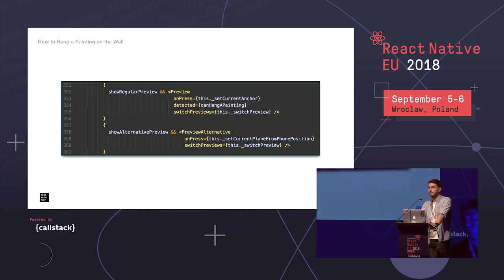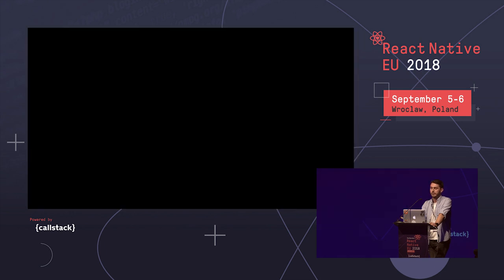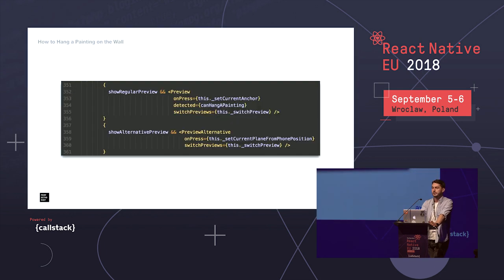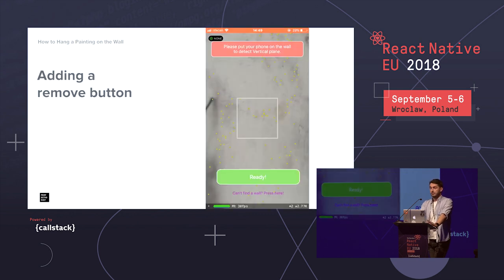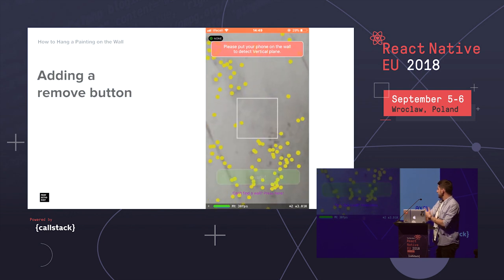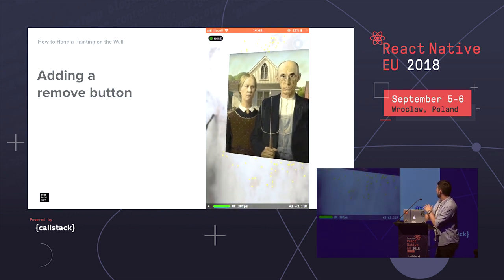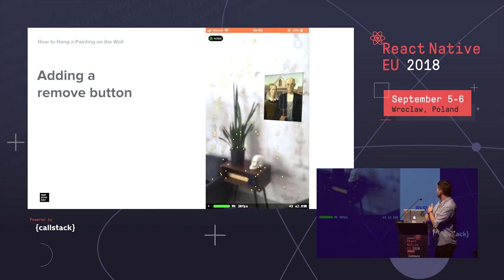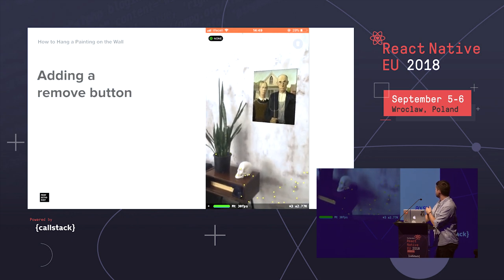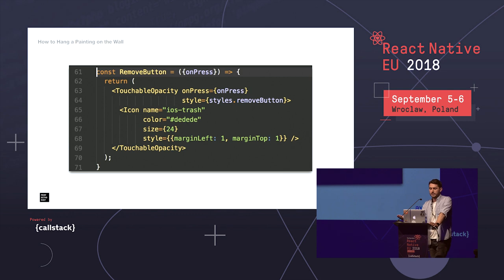For this we'll create another viewfinder and add the ability to switch between them. One downside is the camera may take a moment to refocus after we assign an object to the wall. Now that we've placed the painting, we need a way to remove it, so we add a remove button. It appears in the top right corner, and once pressed it clears the scene and returns to the initial position. For the remove button, install react-native-vector-icons, add the button, and don't forget to rebuild your Xcode project and add the specified font.